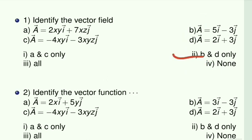Next, problem number 2: identify the vector function. As explained in problem 1, option B and D are talking about a particular point, so they are not coming under the category of vector function. Whereas A and C are vector functions because A is having variables x and y, and C is having variables x, y, z. Once we substitute a point value, then they become a field. So the answer is A and C, whereas B and D are vector fields.